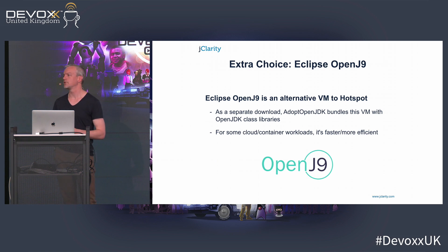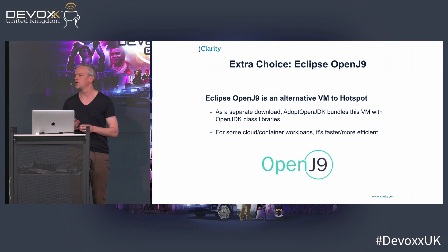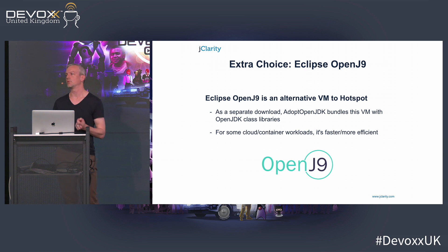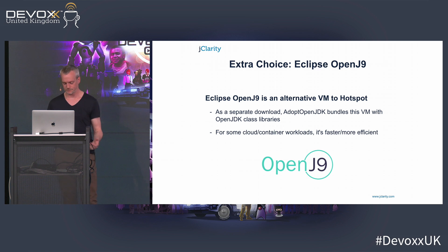You also have an extra choice. Most people will use the Hotspot VM that comes as part of the OpenJDK project. There is an alternative VM called Eclipse OpenJ9. Some people have found Eclipse OpenJ9 to be more efficient in cloud and container workloads. This is a case of let the buyer beware — you need to test that on your workload. But it's an interesting option you can go and explore, and again, it's free.